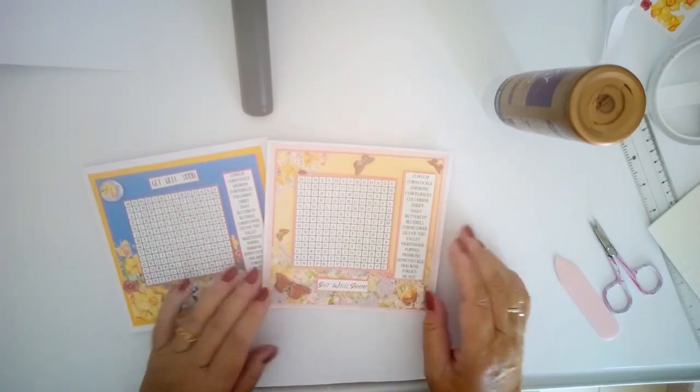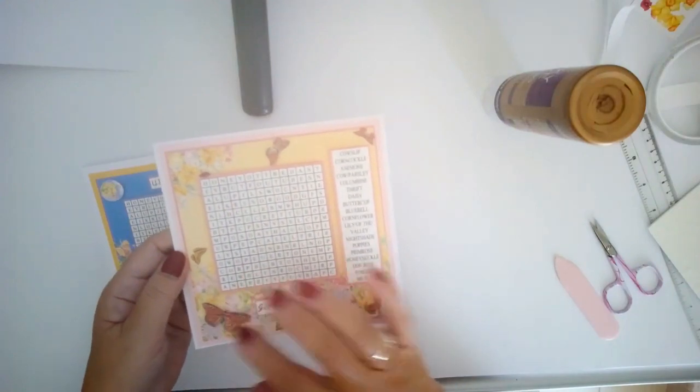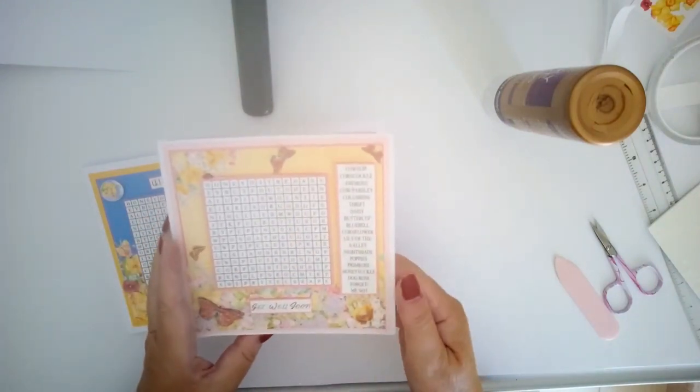So let me show you them first of all. This one is in really summery colors and it's got the little butterflies on that I added a bit of glimmer to which was just to add some shimmer.